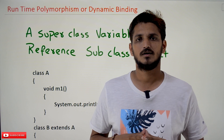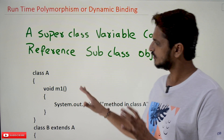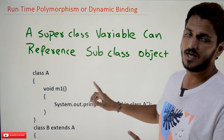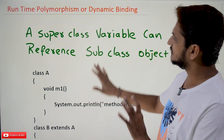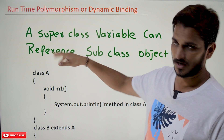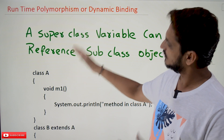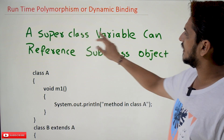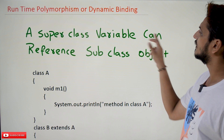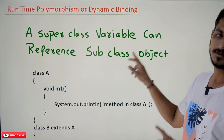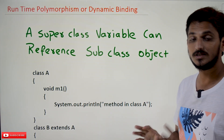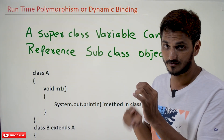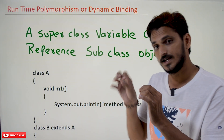Before we move on to the concept of runtime polymorphism or dynamic binding, first let's understand what is accepted in Java. We are going to understand this with an example. A superclass variable can reference a subclass object — yes, this is allowed in Java.